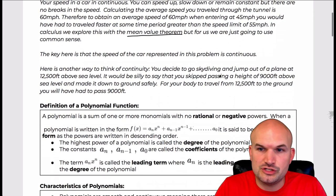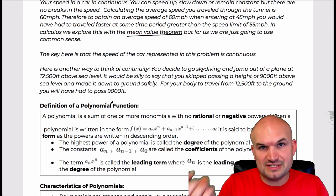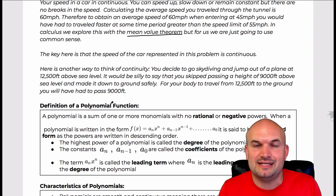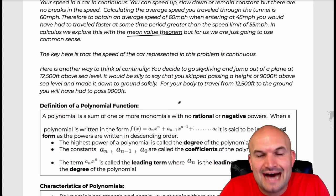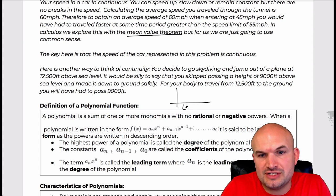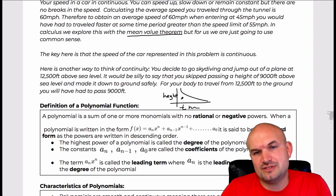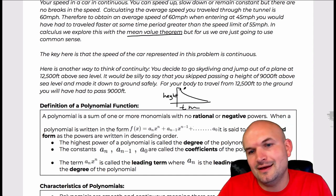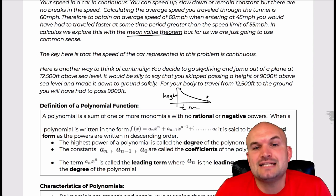Another way to think about continuity: if you were skydiving, jumping out of a plane at 12,500 feet above sea level, traveling all the way down to the ground, you are going to pass every single height above the ground. There's no way to go from 12,500 feet and immediately be on the ground — no teleporting. The graph of your height as a function of time is going to be continuous. There are no breaks, no jumps, no discontinuities.